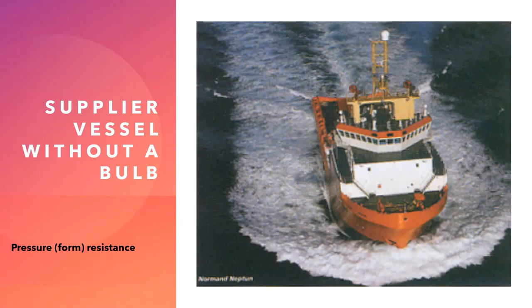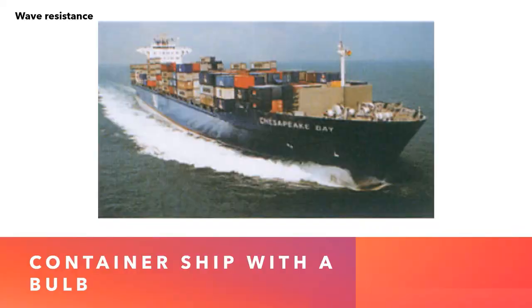Before ending, I want to discuss ships with and without a bulbous bow. On screen here is the supplier vessel shown earlier, without a well-formed bulbous bow. If you compare this vessel to oil tankers, bulk carriers, car carriers, or container ships, you will see they have a very clearly and well-formed bulbous bow. This bulbous bow prevents an increase in pressure or water pressure near the bow, and the improved streamline of the ship's underwater body reduces the wave system around the ship.